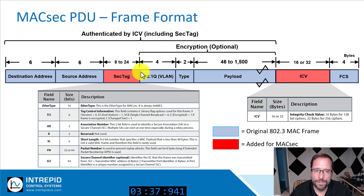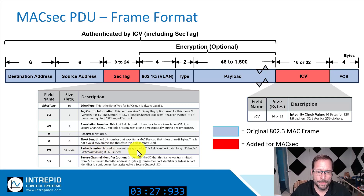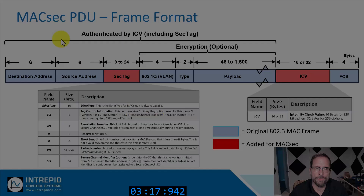Encryption is optional, from the SEC tag including the entire payload. In the SEC tag, important fields are the packet number — incrementing by one every time a MACSEC PDU is transmitted, preventing replay attacks — and the association number, used to look up the correct ephemeral key. MACSEC PDUs always have the ether type 88E5.